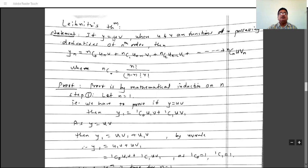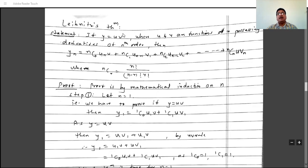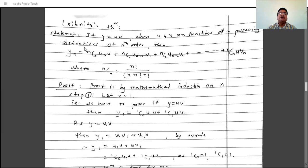Leibniz's theorem is used when y equals u times v, where u and v are functions of x possessing the nth order derivative. Then yn equals the sum: nC0 times u_n times v plus nC1 times u_(n-1) times v1 plus nC2 times u_(n-2) times v2 plus ... plus nCn times u times v_n, where nCr equals n factorial divided by (n minus r) factorial times r factorial. The product rule (uv rule) from 12th grade is actually a particular case of Leibniz's theorem. We will see the proof in the next lecture.